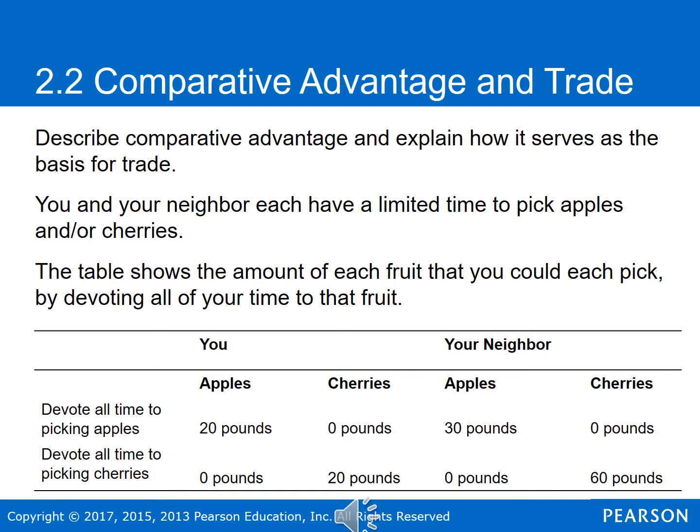Let's say, for instance, you and your neighbor have a limited time to pick apples and/or cherries. You have to choose a combination of the two or choose to focus on one or the other. This table below shows the amount of each fruit that you could pick by devoting all your time to that fruit.